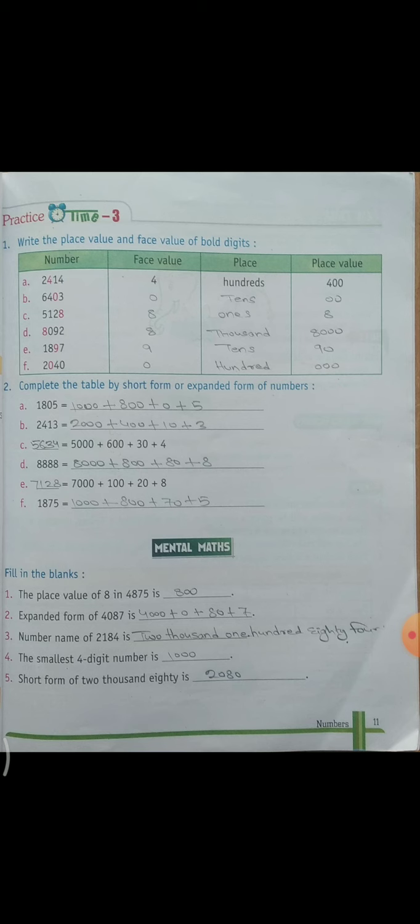Sabse pehle a part dhe rakha hai 1, 8, 0, 5. Matlab 1805. Toh iske expanded form me likhenge. To 1000 plus 800 plus 0 plus 5.